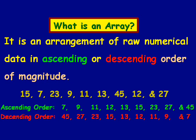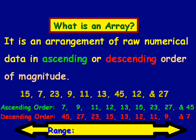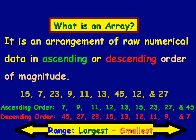Now, if we look a step further at an array, we can look at what a range is. A range is basically the difference between the largest number in the set of data and the smallest number. So we take the largest number in that set of data and subtract the smallest number from it, and that gives us a range of data.